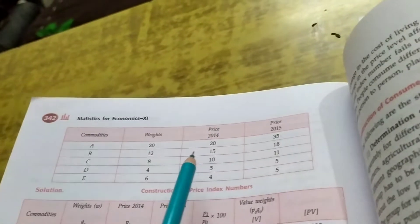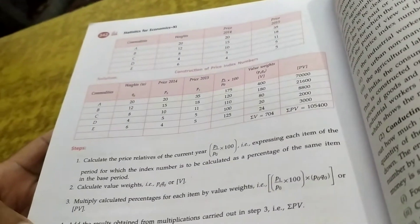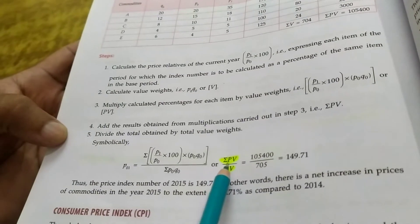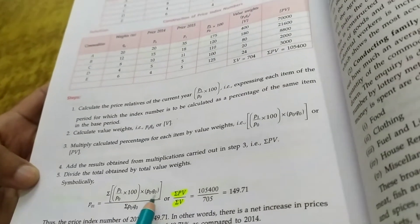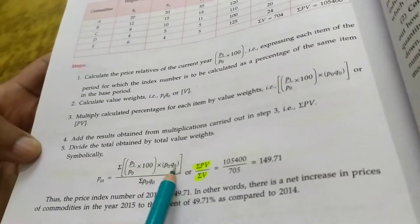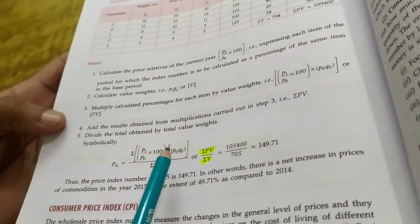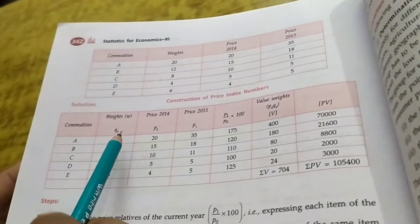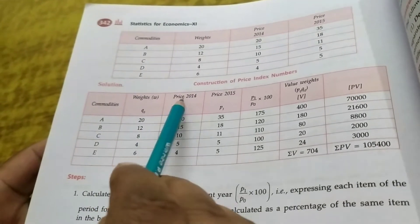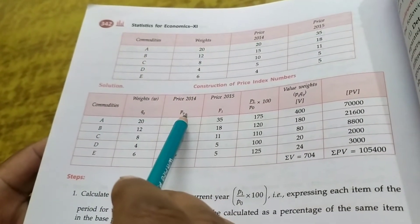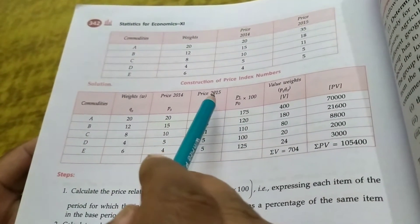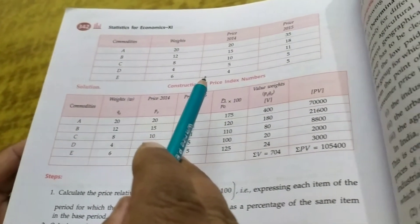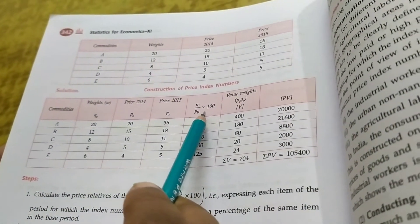Commodities A, B, C, D, E; weights 20, 12, 8, 4, 6; price in 2014, price in 2015. Before attempting this question, first of all I will write down the formula. Formula is P01 equal to sigma PV upon sigma V, where P equal to P1 upon P0 into 100, and V equal to P0 Q0. Now let us see: in the question where it is given weight I will take it as Q0, price in 2014 this is my P0, and price in 2015 this is my P1.